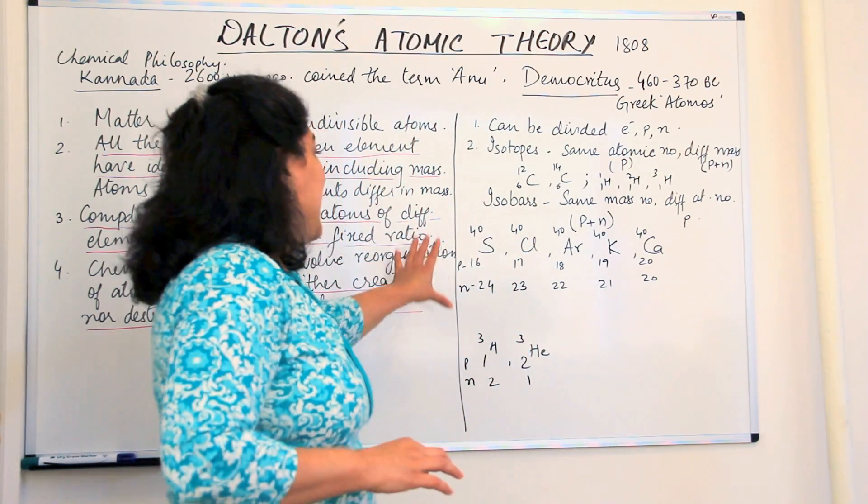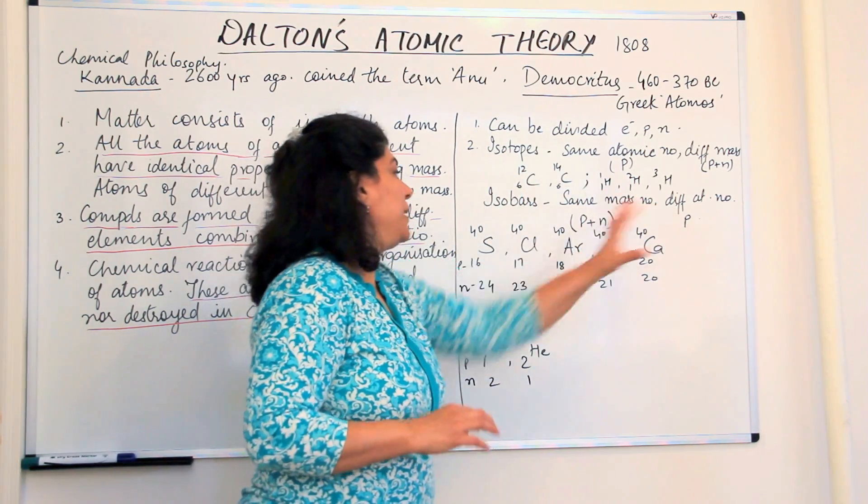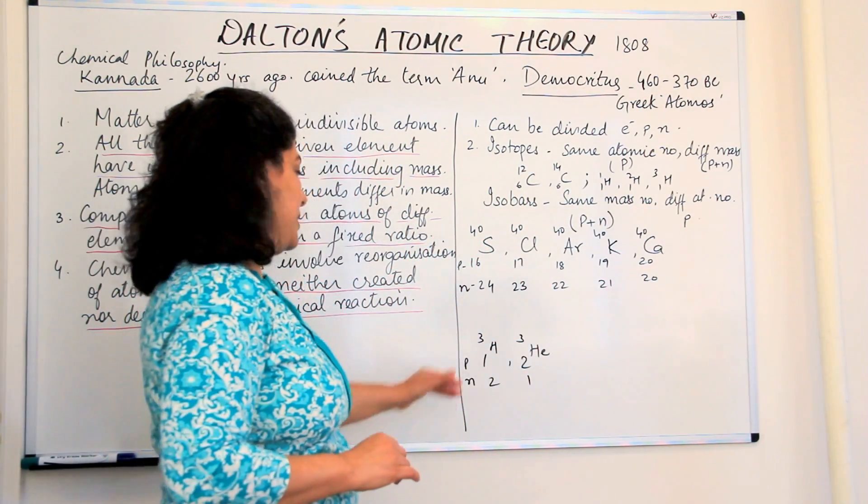So we see that sulphur, chlorine, argon, potassium, calcium are all isobars. Similarly, hydrogen and helium-3, both of them have one and two number of protons, different elements.